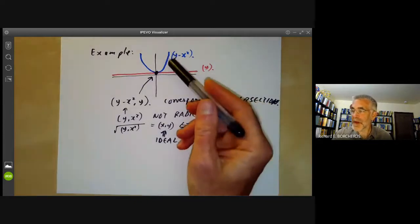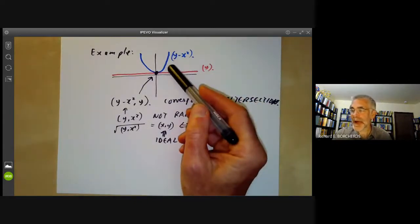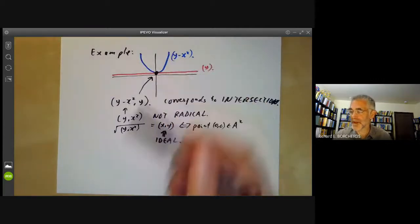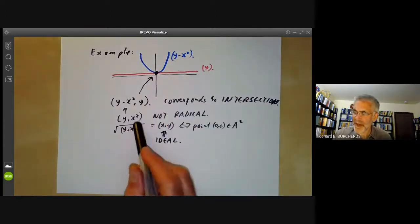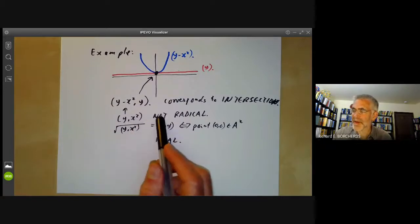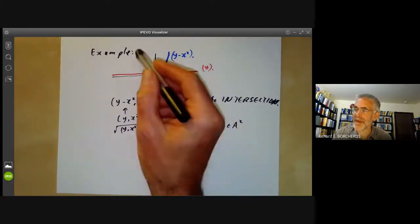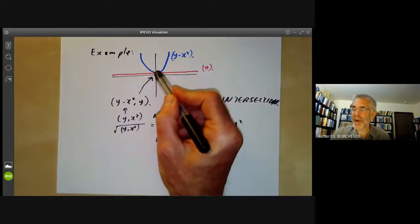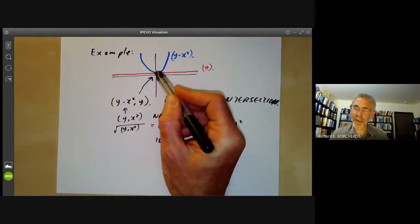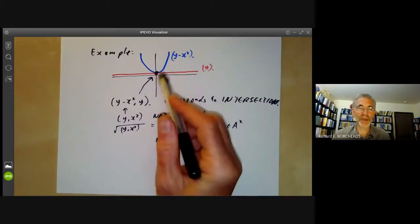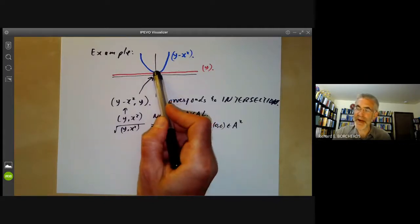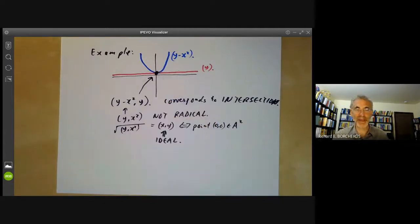So here we have a non-radical ideal turning up very naturally as the intersection of two curves. And the fact that this ideal is not radical kind of corresponds to the fact that if you intersect the parabola and the line, well, it sort of looks as if there's only one point there, but it's really a double point. So it ought to be counted as two points. And somehow the fact that this ideal is non-radical is trying to account for the fact there are really two points there in exactly the same place, whatever that means.